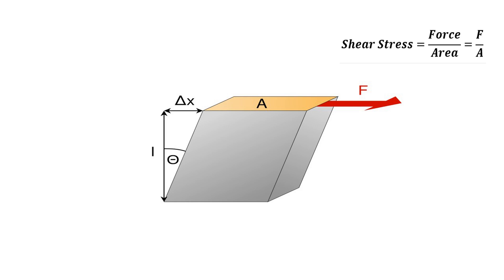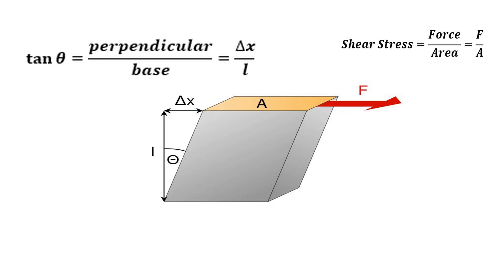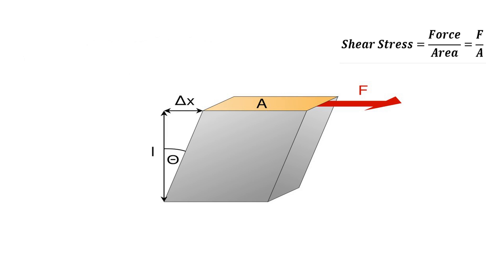The shear strain can also be expressed in terms of theta. In this triangular shape, Δx is the perpendicular side and L is the base. Since perpendicular divided by base equals tangent theta, Δx divided by L equals tan θ. Therefore, the shear strain is equal to tan θ.